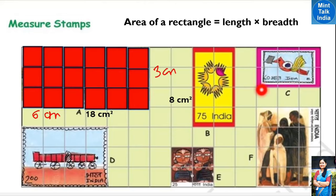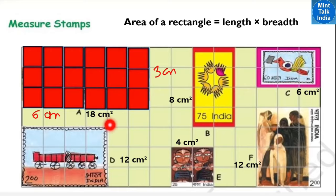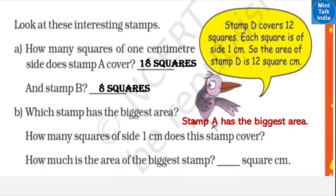For stamp C, the area is 6 square centimeters. Stamp D is 12 square centimeters. Stamp E is 4 square centimeters. Stamp F is 12 square centimeters. In all stamps, we multiplied the length and breadth to find the area. The stamp with the biggest area is stamp A, because it is 18 square centimeters.